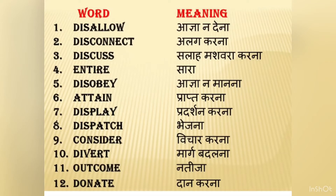Attain means prapt karna — to achieve or obtain. For example, if someone scored 90% marks: He attained 90% marks. He attained first position. Display means pradarshan karna — to show or exhibit. You should display this picture outside the showroom. Dispatch means bhejna — to send. Have you dispatched that letter? — Kya aapne wo letter bhej diya hai?